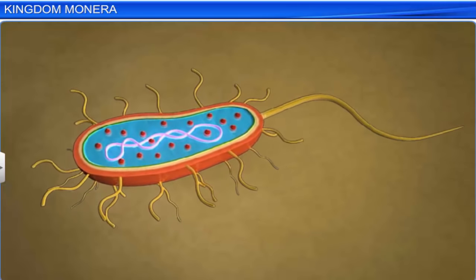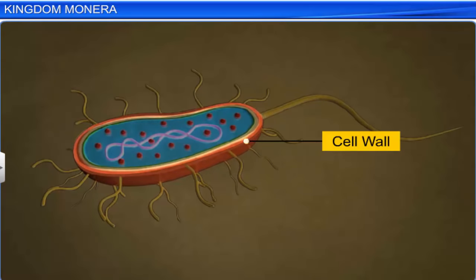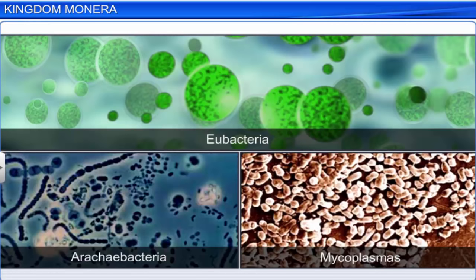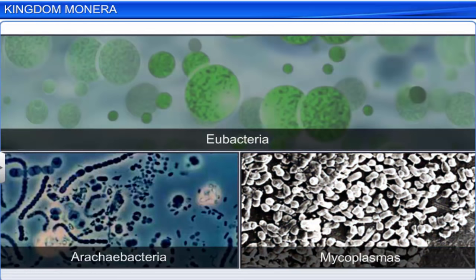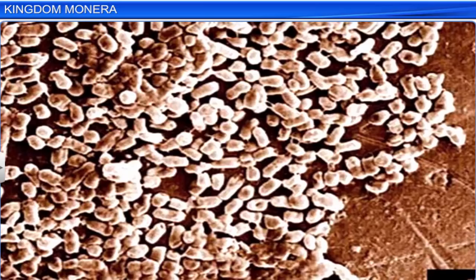Archaebacteria have a cell wall structure different from other bacteria, which helps them to survive in extreme conditions. Unlike eubacteria and archaebacteria, mycoplasmas are bacteria that do not have a cell wall. They are also the smallest living beings ever known, and can survive without oxygen. They are pathogenic in animals and plants.